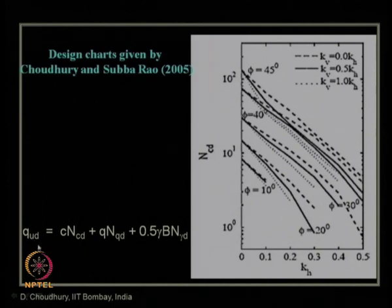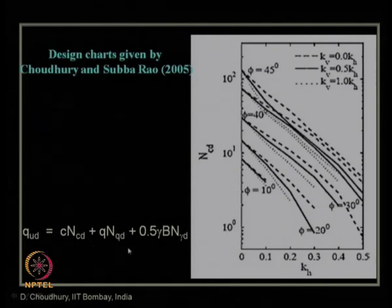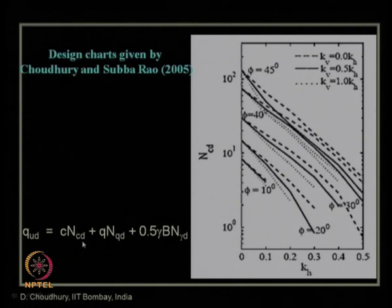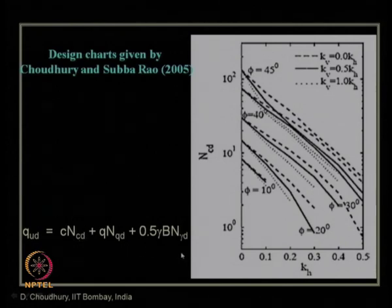The seismic bearing capacity equation is: QUD = C·NCD (cohesion component) + Q·NQD (surcharge component) + half·γ·B·NγD. This is exactly Terzaghi's bearing capacity equation, but modified for seismicity using pseudo-static seismic acceleration. NCD, NQD, and NγD are seismic bearing capacity factors using the pseudo-static approach.